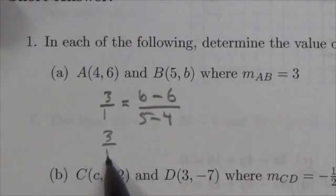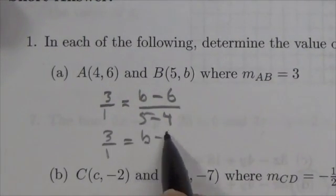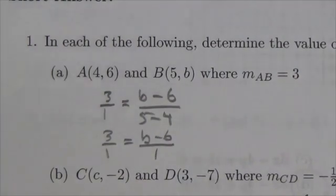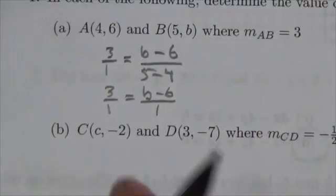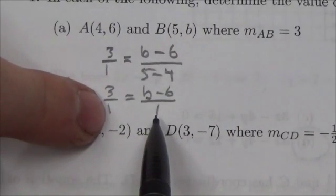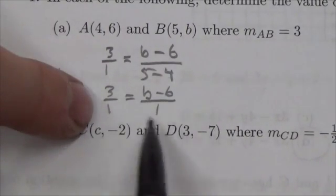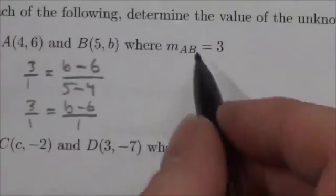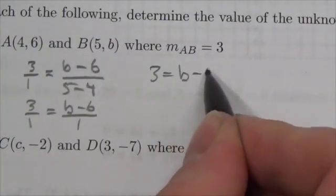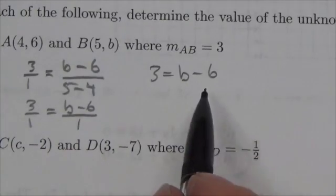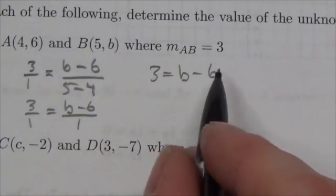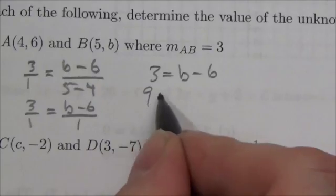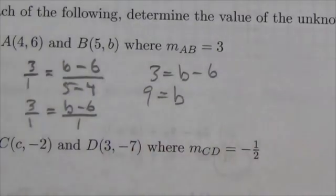Now this becomes 3 over 1 is b minus 6 over, well 5 minus 4 is 1. Well this is interesting because notice the denominators are identical. If these two fractions are the same and the denominators are the same, that means the numerators must be the same. Then to solve for b just bring the 6 over, add it to both sides and I get 9 is equal to b. There's the unknown.